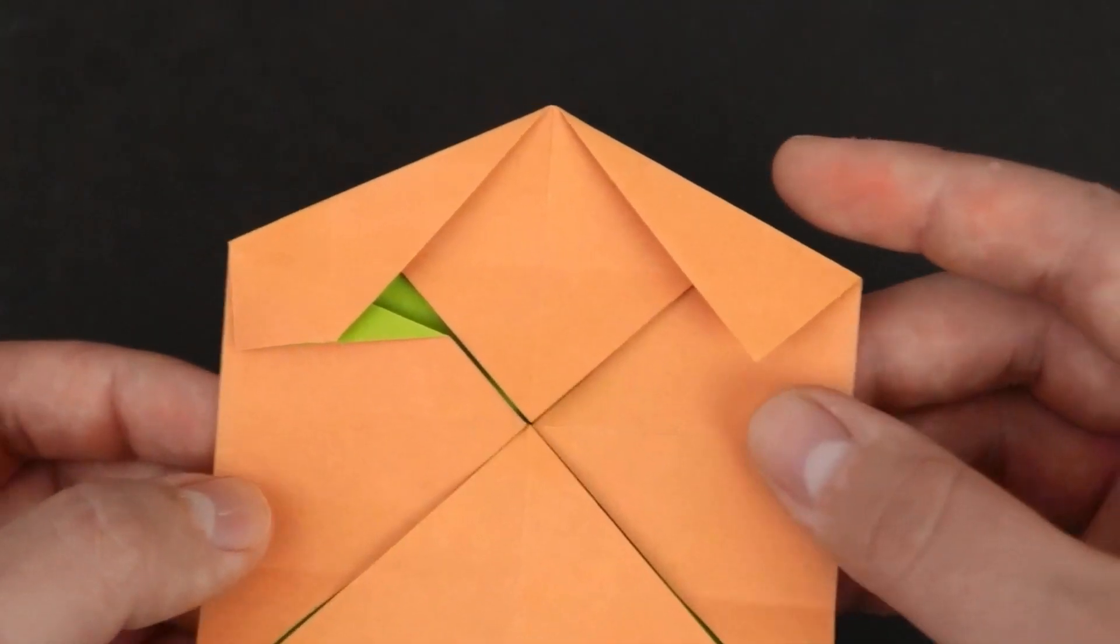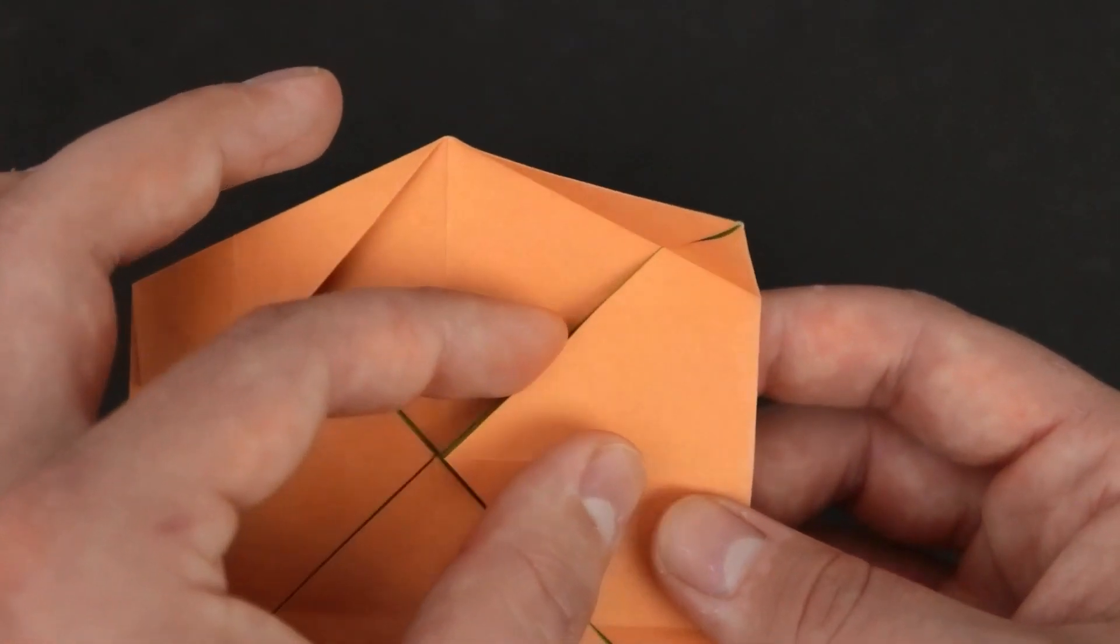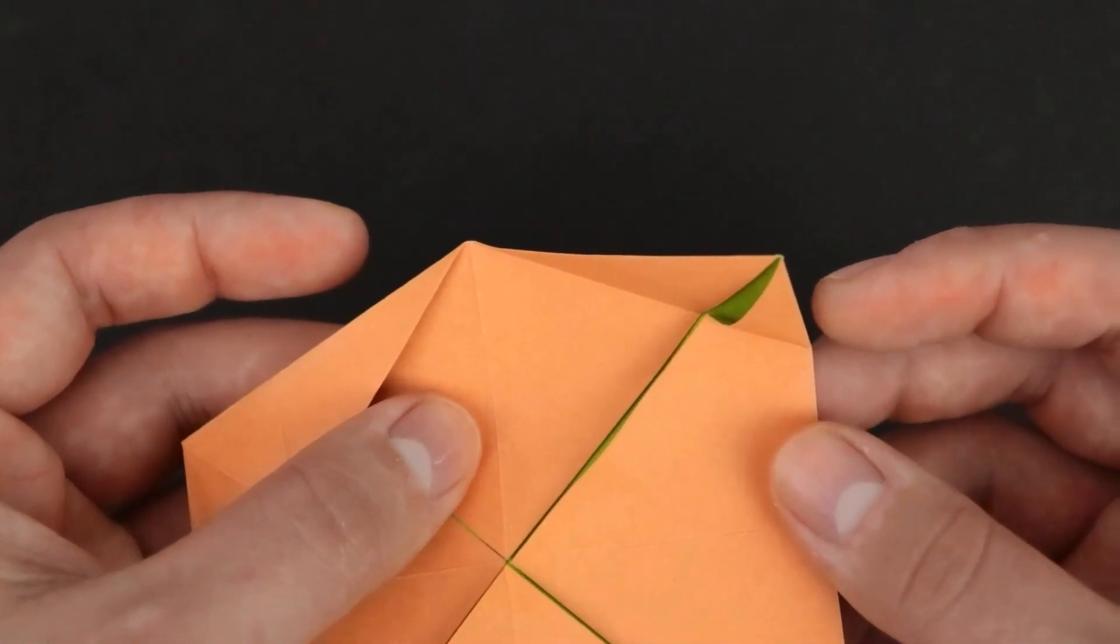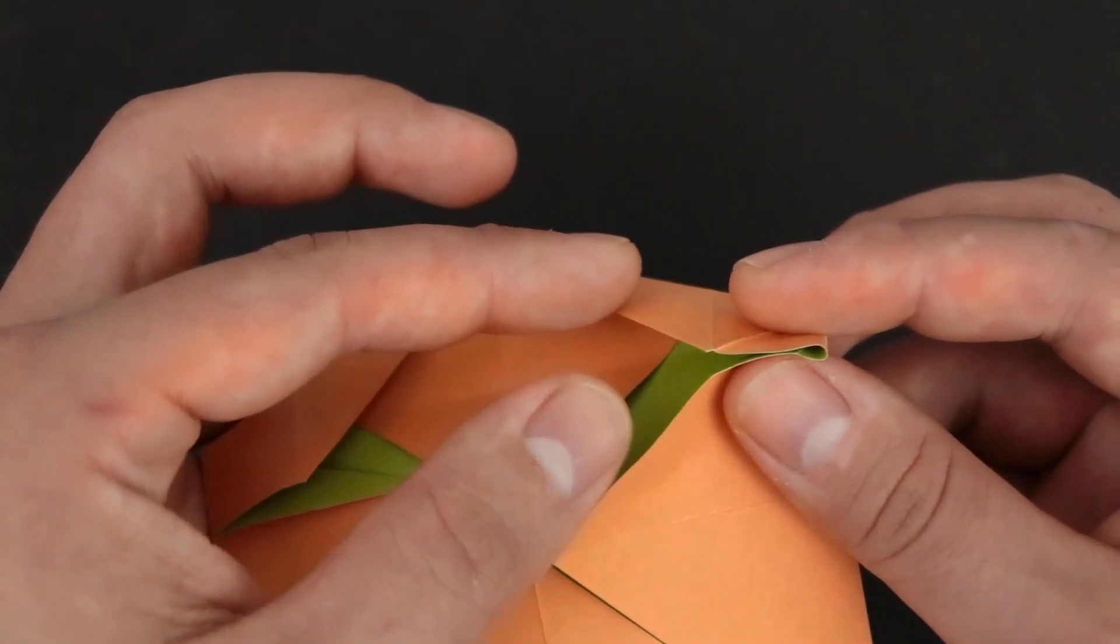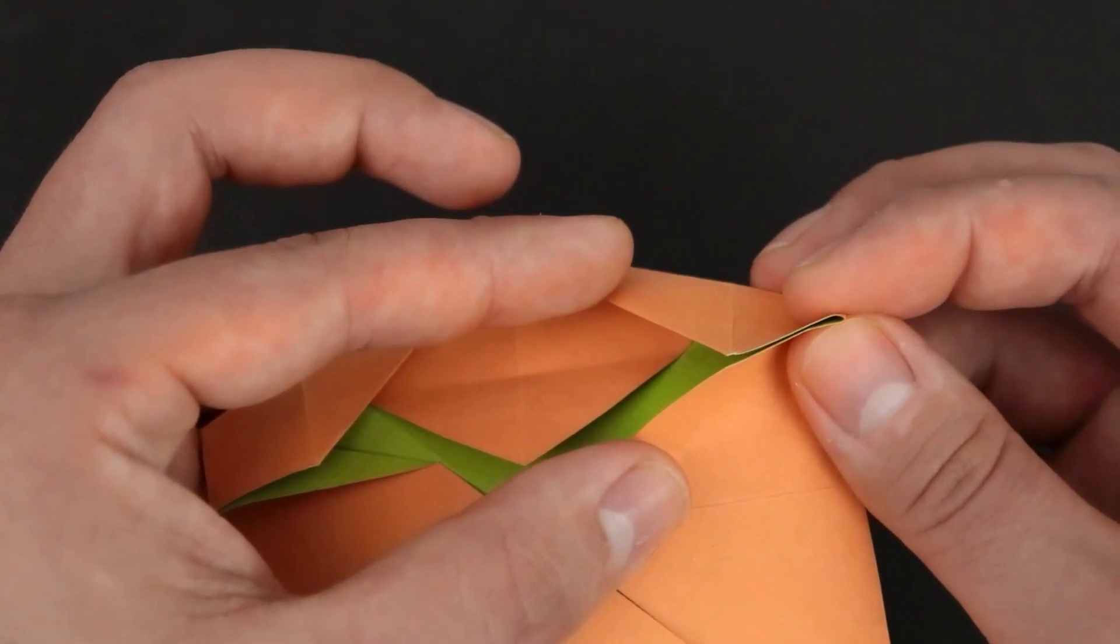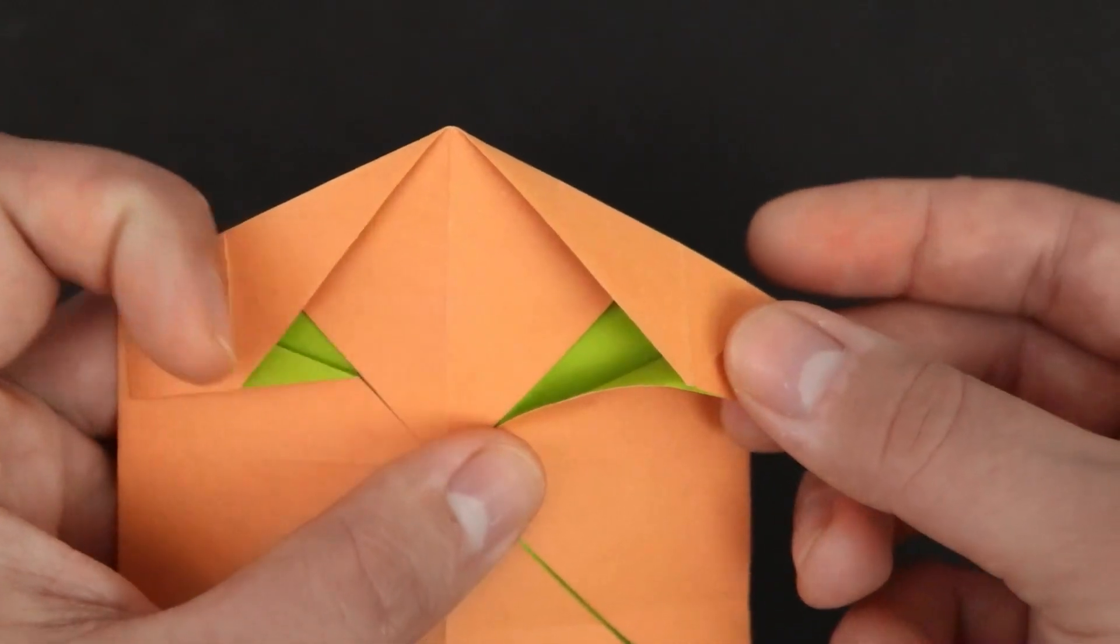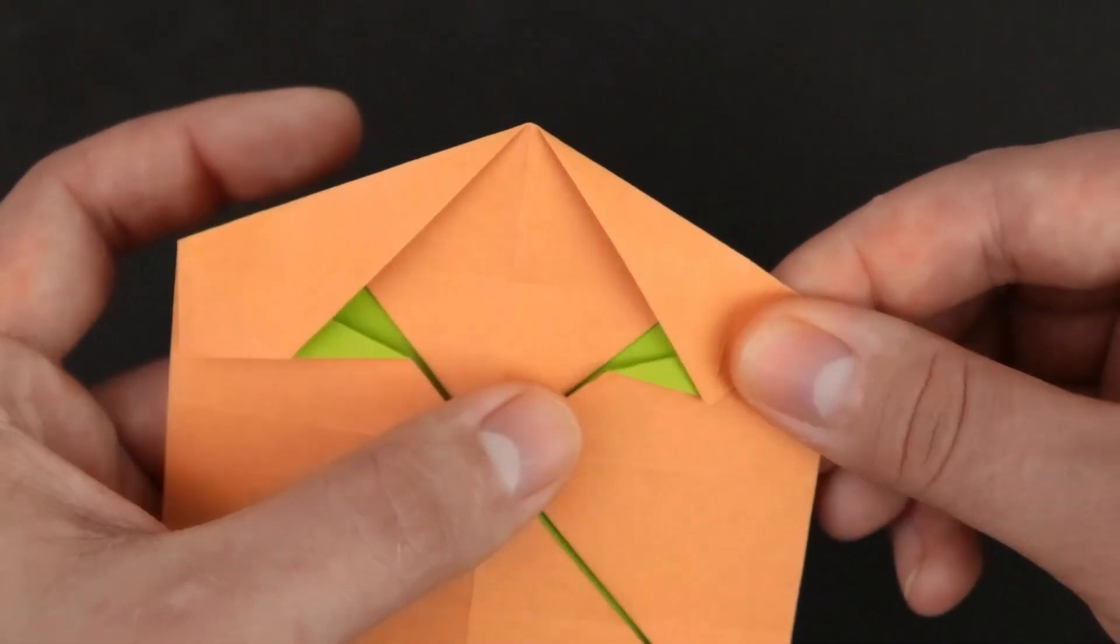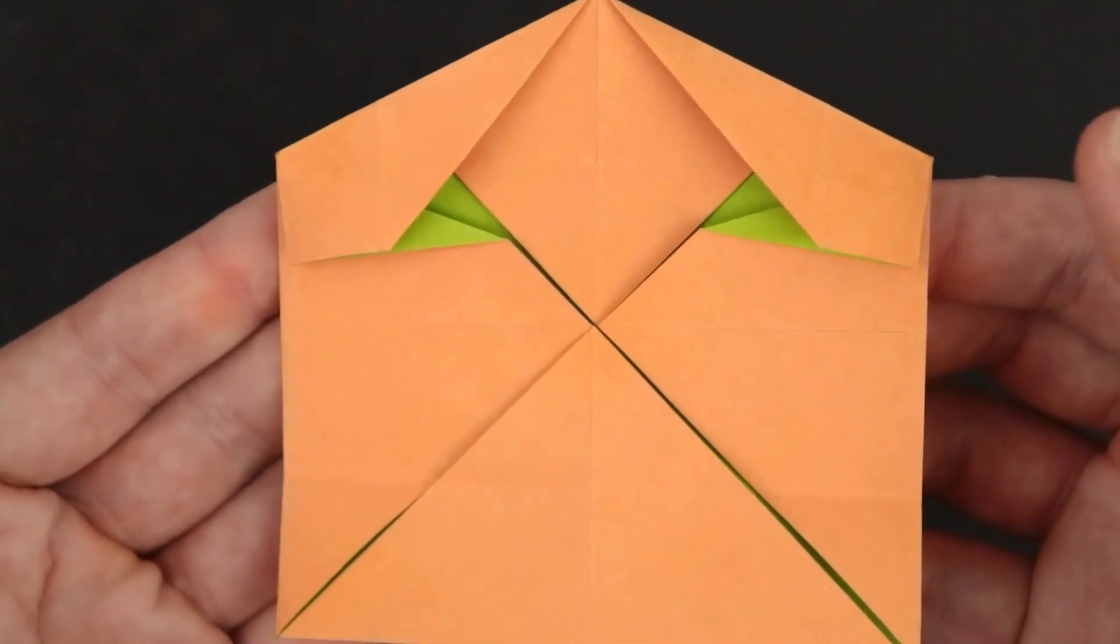On the other side, let's do the same. Unfold the corner and fold the next layer. And the eyes are done.